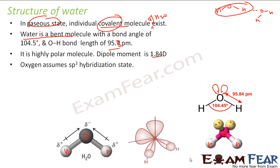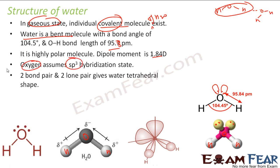Oxygen undergoes sp3 hybridization in water. It has two bond pairs and two lone pairs, giving it a tetrahedral shape. So water is a bent molecule with tetrahedral geometry, two bond pairs, two lone pairs, and sp3 hybridization.